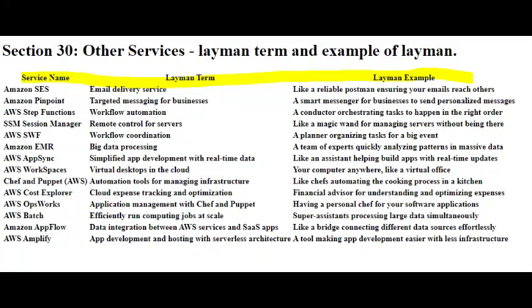AWS Step Functions is like a conductor for your application's workflow. It helps you coordinate and automate different tasks, making sure they happen in the right order, with the right inputs, and at the right times.